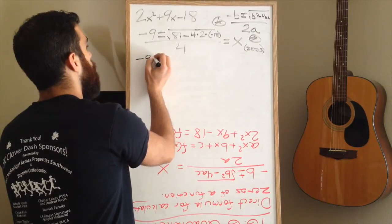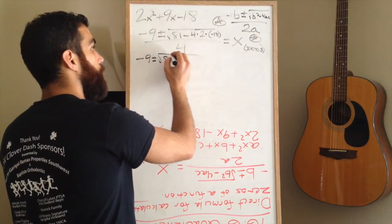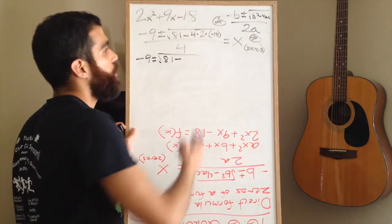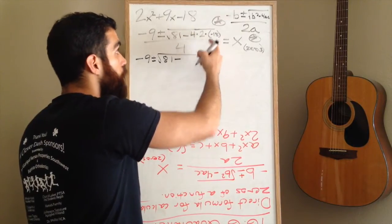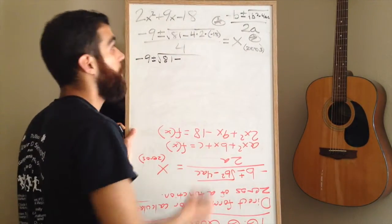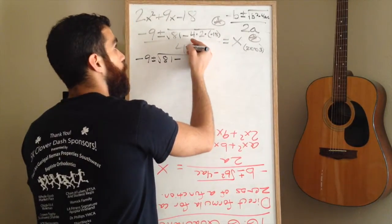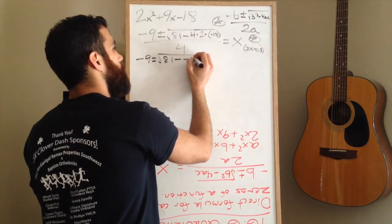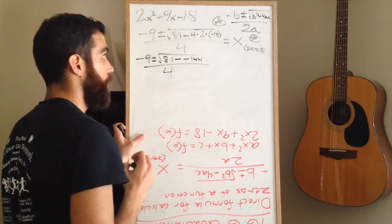It says negative 9, and then it says plus minus the square root. 81, you don't do anything to. The minus sign stays there, but you now have to multiply 4 times 2 times negative 18. 4 times 2 is 8, and 8 times negative 18 is negative 144. All of that is over a 4 in the denominator.